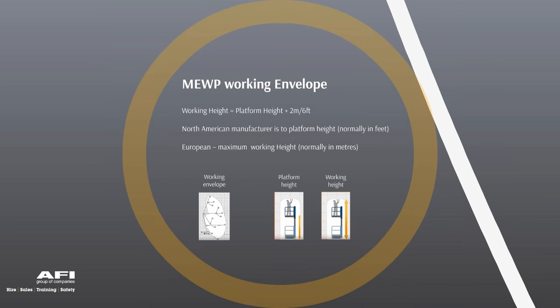In each operator's manual and spec sheet you'll find the working envelope of the machine — critical when a specific height has been requested. The key difference to understand is that platform height and working height differ by two metres (six feet). There have been significant blunders where someone incorrectly states the platform height instead of the working height, and when the operator reaches full height they find they are two metres short — then climbing on the guardrails.